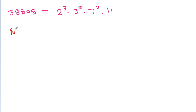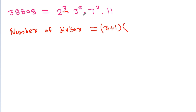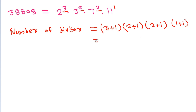And the number of divisors will be equal to (3 plus 1) times (2 plus 1) times (2 plus 1) times (1 plus 1). And it is 4 into 3 into 3 into 2, and 4 into 3 is 12, times 3 is 36, times 2 is 72.